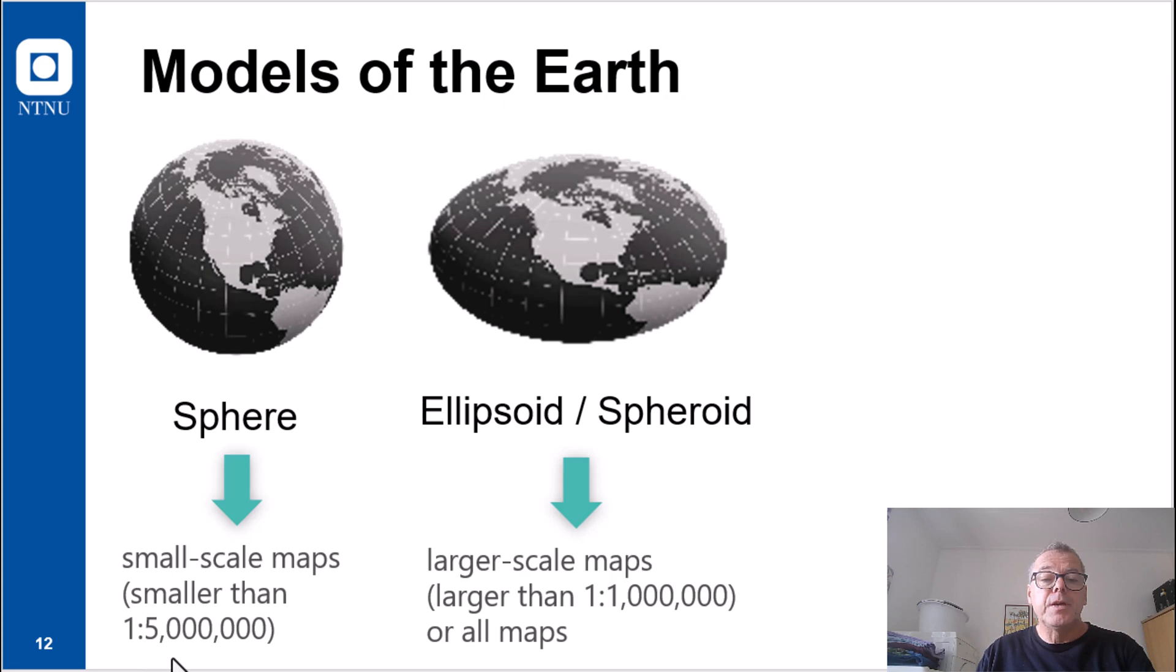But the assumption that the earth is a sphere is possible for small scale maps. That is, maps having a scale smaller than 1 to 5 million. At this scale, the difference between a sphere and a spheroid is not detectable on a map.